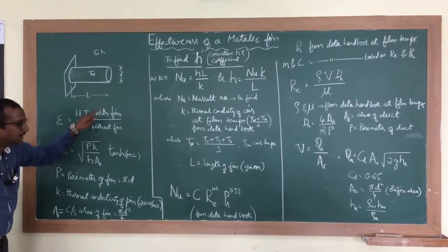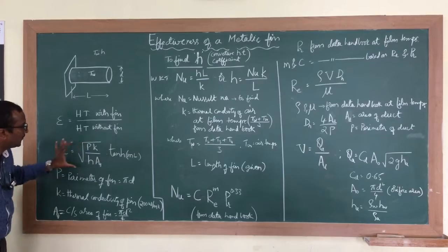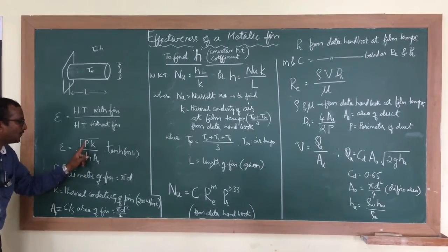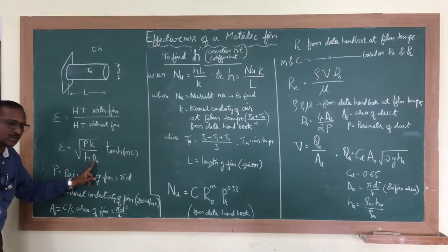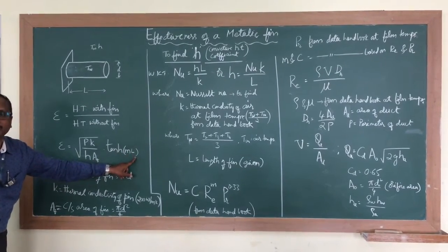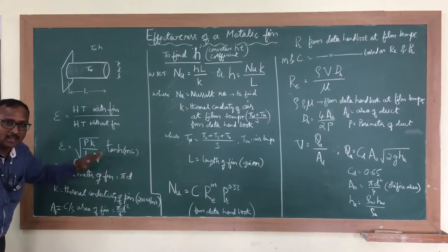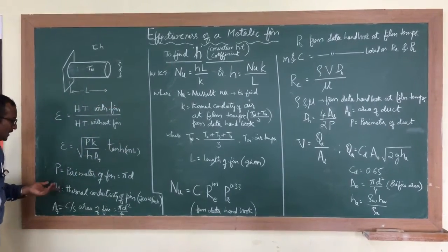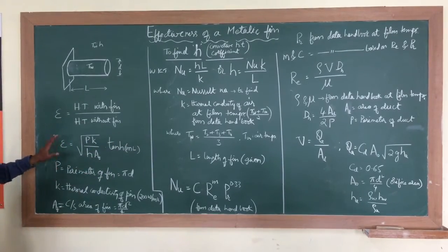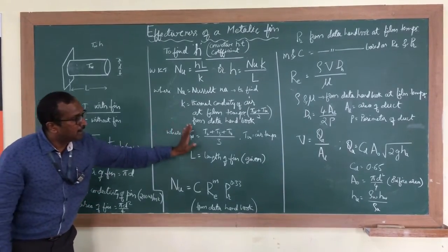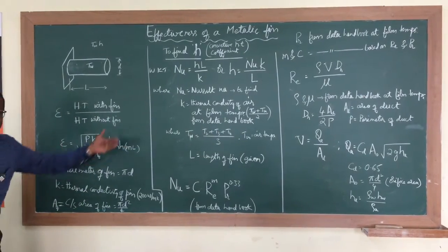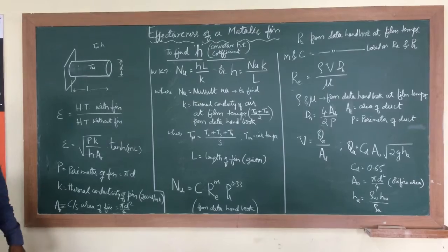After the derivations and putting all the formulas together, we finally get the formula for effectiveness: root of P·K over H·A_fin, multiplied by tanh(mL). How did we get this formula? We learned it in the theory class. Now, how to conduct the experiment and find this effectiveness — it involves a lot of calculations which are explained on the board, and we are going to go through the experiment step by step.